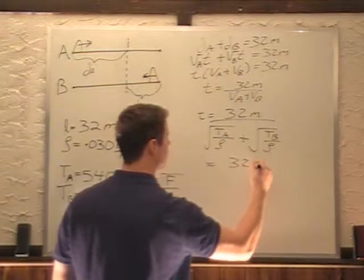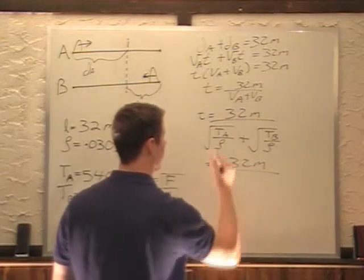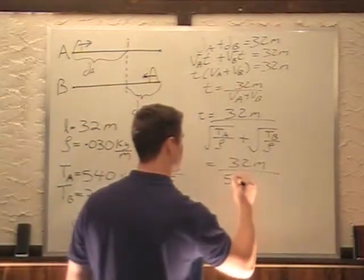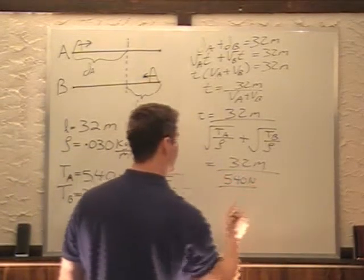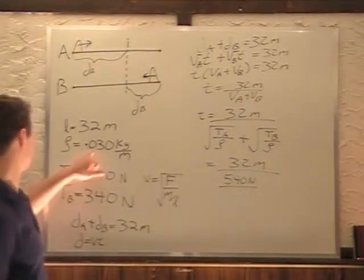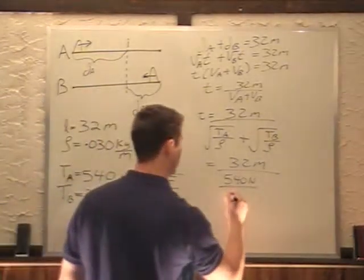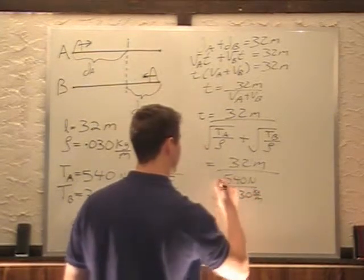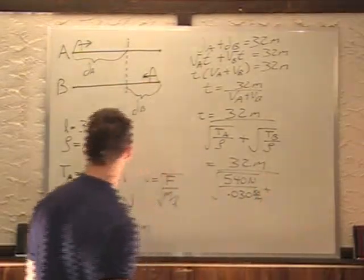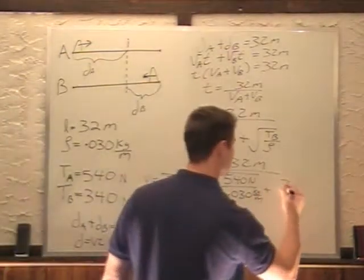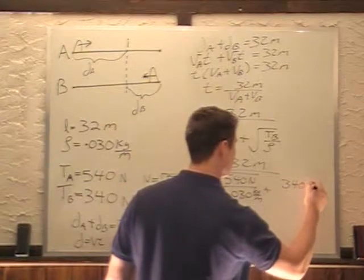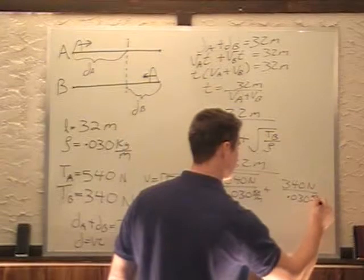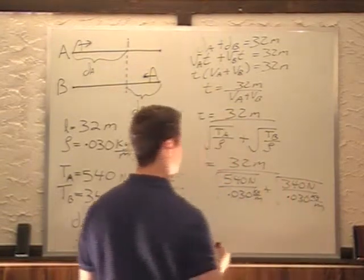Equals 32 meters divided by, now I plug in my values. Tension of A is 540 newtons, 540 newtons divided by rho, 0.030 kilograms per meter, square root. Plus 340 newtons divided by 0.030 kilograms per meter under the square root sign as well.